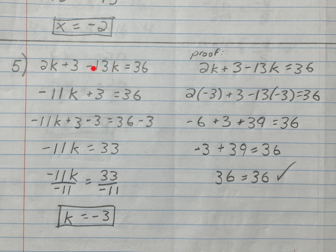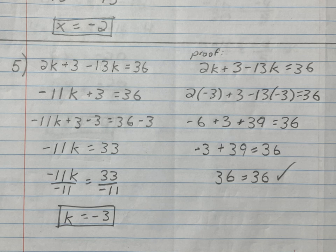2k take away 13k is -11k. We had 2; going down 13, the first 2 gets us to 0, and the next 11 gets us 11 below 0. So 2k minus 13k equals -11k. The plus 3 on the left side has nothing to combine with, so it stays: -11k + 3 = 36.